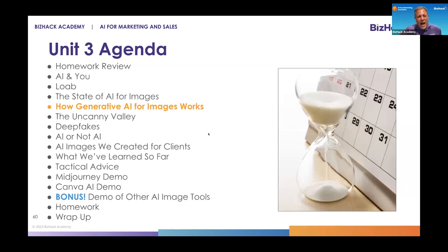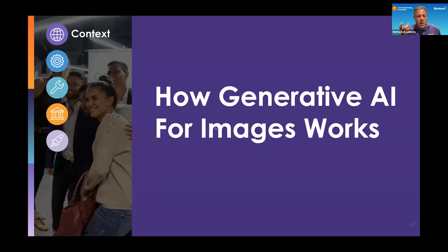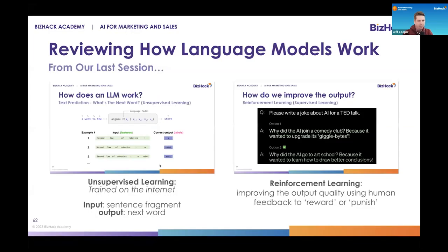So how generative AI for images works — it's really important for us to dig a little deeper into some of the mechanics of this. Reviewing from our session last week, when we talked about language models like ChatGPT and broke down how those work, there were really two stages. There was something we call in machine learning unsupervised learning,